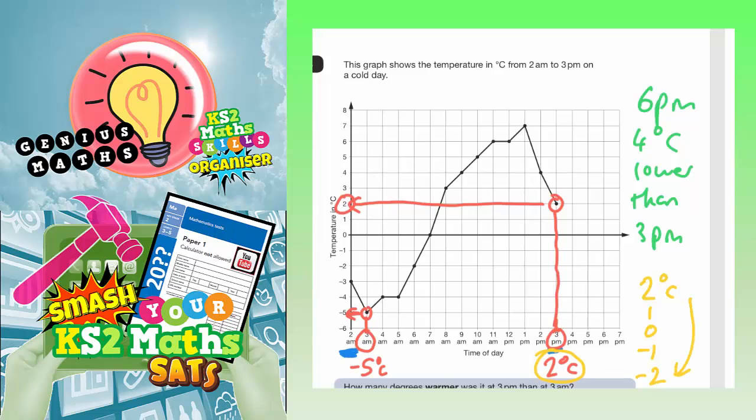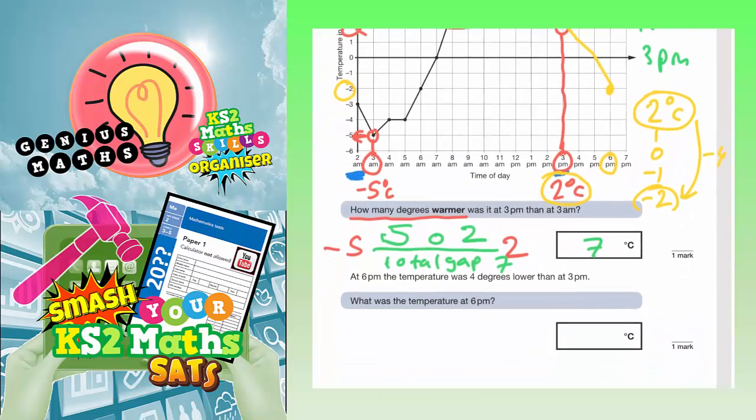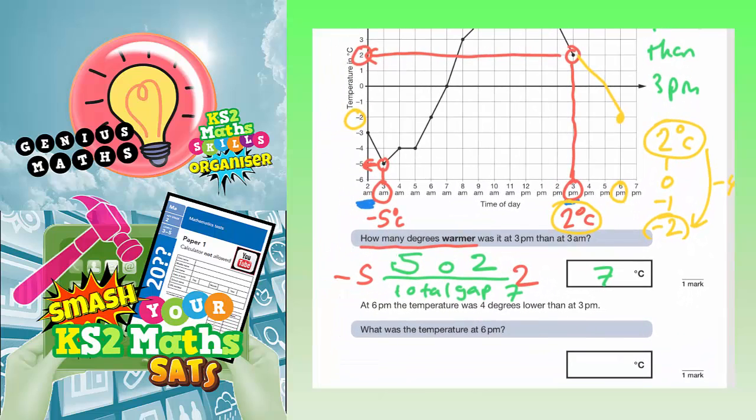So when you drop down 4 degrees from 2 degrees, if you take away 4 from 2, you get to minus 2. So that is going to be our answer. We might even want to plot that on the graph. So 6pm is here, and we're going down to minus 2. So minus 2 is here. Okay? So your line would actually continue down. So let's just write that in our answer box. Answer, minus 2 degrees.